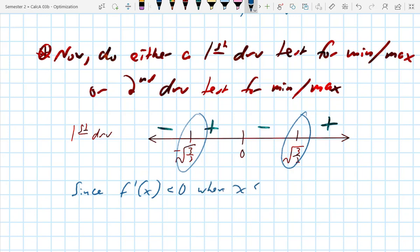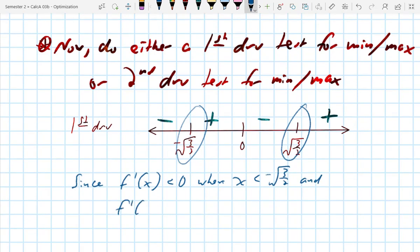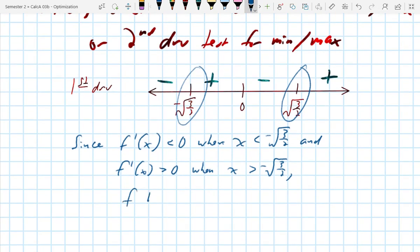and I'm only going to do this for one of them, and f prime of x is greater than 0 when x is greater than negative root 3 halves. f has a minimum at x equals negative root 3 halves. You'd have to write that for every single one that you're trying to show.